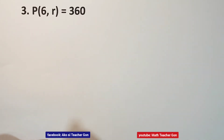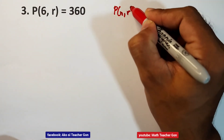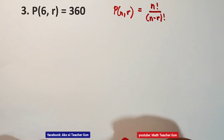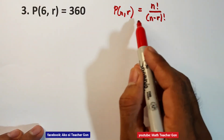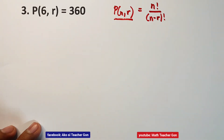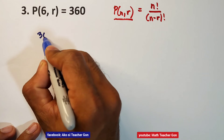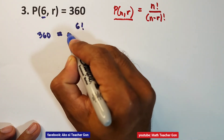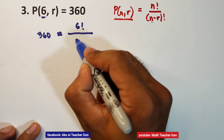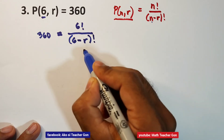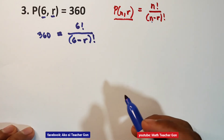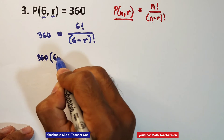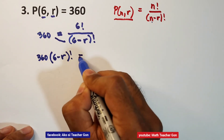Let us have item number 3. The formula is P of n taken r equals n factorial all over the quantity n minus r factorial. Substituting the given values, 360 equals 6 factorial all over 6 minus r factorial, since n equals 6 and r is the missing value we need to find. Cross-multiplying gives 360 times 6 minus r factorial equals 6 factorial.